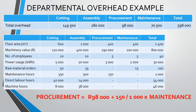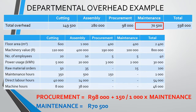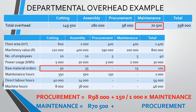Now that we have worked through the equation for the procurement department, take a moment to formulate the maintenance department's equation on your own before we go through it together. Maintenance must equal the R70,500 already included in the department plus some portion of the procurement department. We ask ourselves, how much work did the procurement department do for the maintenance department? We have been allocating the procurement department based on raw material orders. Of the 100 raw material orders made by procurement, 15 relate to the maintenance department. Therefore, 15 out of 100 of the procurement department needs to be allocated to the maintenance department.